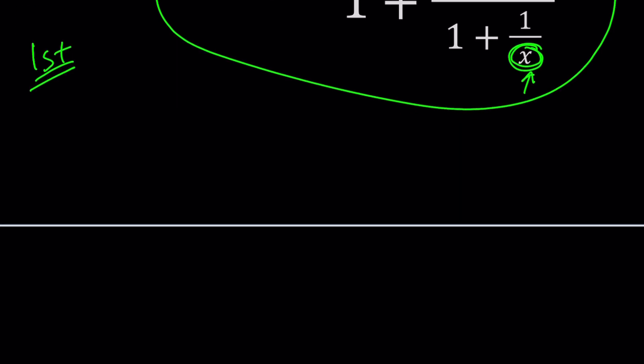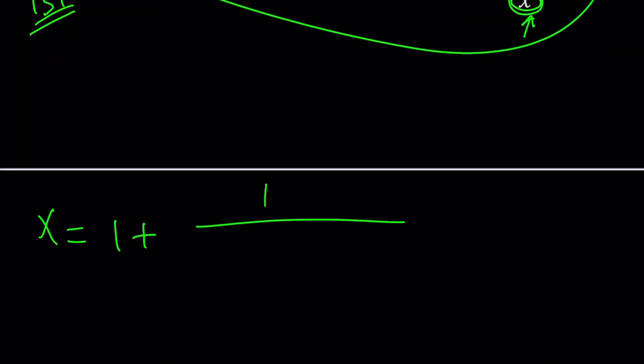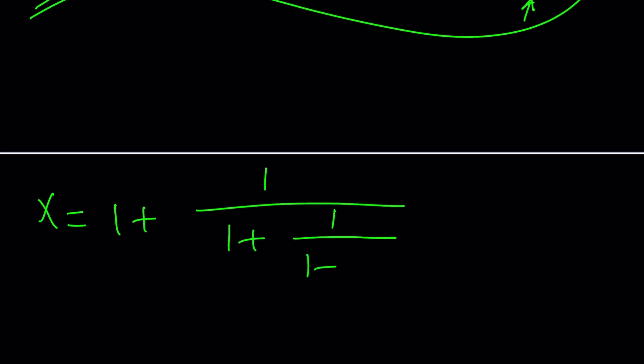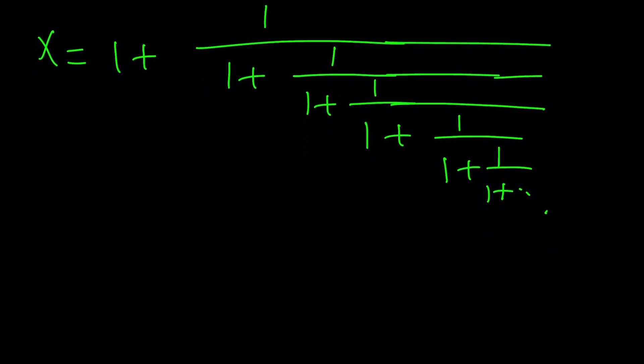So we're going to get the following from there. x equals 1 plus 1 over 1 plus 1 over 1 plus 1 over x. And then I'm supposed to replace this x with the whole thing so it's going to look like this: 1 plus 1 over 1 plus 1 over 1 plus... You get the idea? This is going to go on forever. If you keep doing this you're going to get more and more fractions.